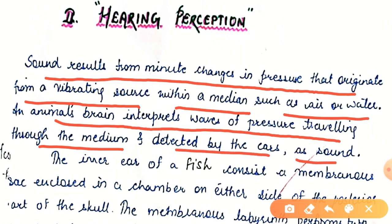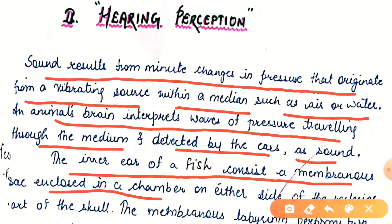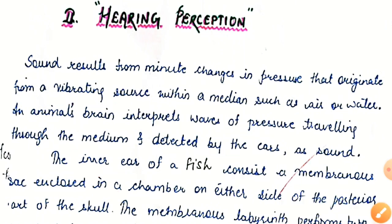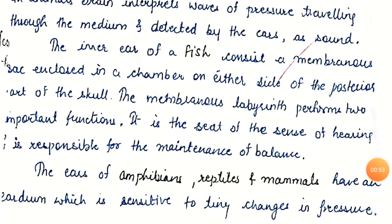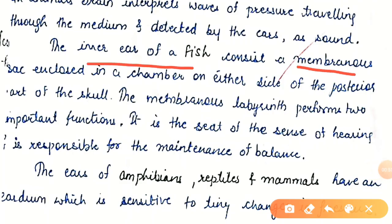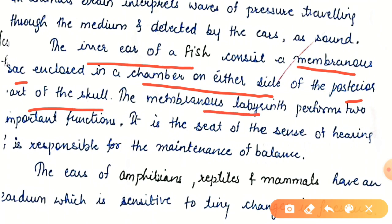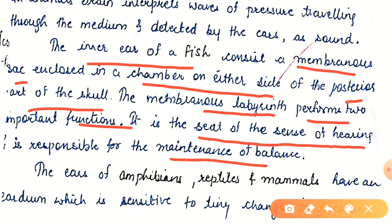The inner ear of a fish consists of a membranous sac enclosed in a chamber on either side of the posterior part of the skull. The membranous labyrinth performs two important functions: first, it is the seat of the sense of hearing, and second, it is involved in the maintenance of balance. So hearing and balance are the two functions.